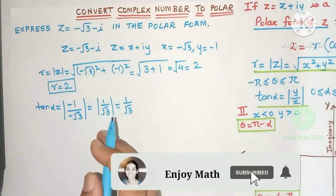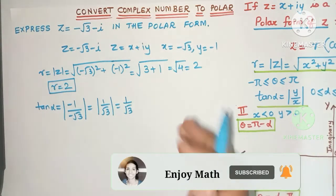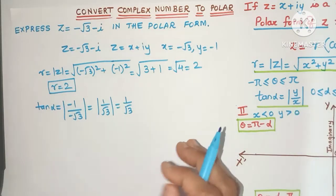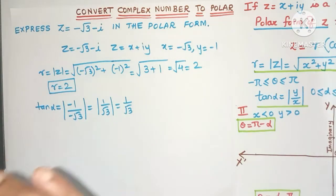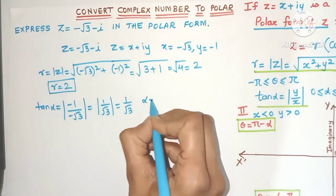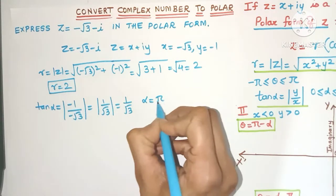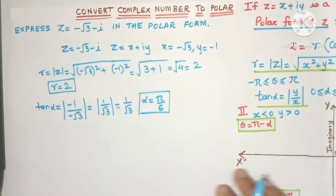Now tan of which angle is 1/√3? Yes, tan of 30 degrees is 1/√3, but we are going to write it in radian measure. So alpha will be 30 degrees which is π/6 radians. I hope you understood till here.